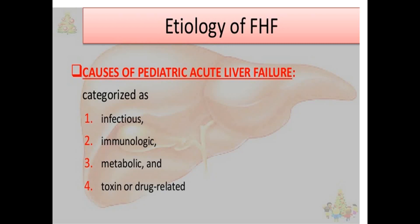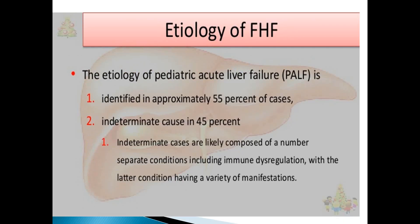The etiologies in children — because acute fulminant hepatic failure is mostly seen in children — it is infectious, immunological, metabolic, or it may be toxin or drug-related. Of all these, drug-related is most important. The etiology in pediatric acute liver failure is identified in approximately 55% of cases and is indeterminate in 45%. Indeterminate cases likely include immune dysregulation conditions with a variety of manifestations.